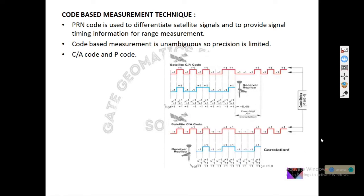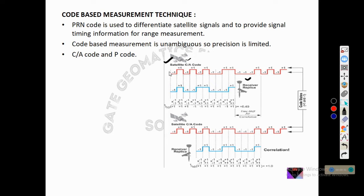Suppose this is the satellite Coarse Acquisition code. The receiver creates a replica of that Coarse Acquisition code and tries to correlate it with the satellite code. The code correlation works by summing values — for example, minus one and minus one give plus one — and dividing by the total count. If the result is plus 0.4, that means the codes are only 40% matching, so the shifting continues.